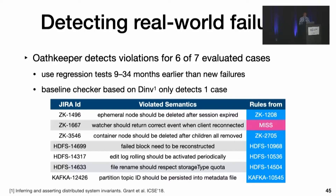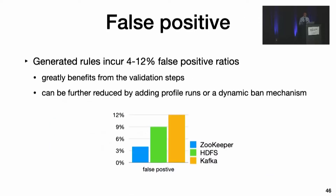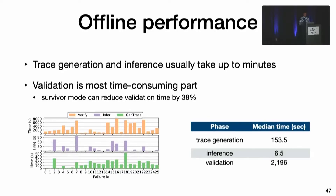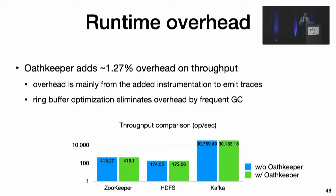In comparison, the baseline checker implemented based on DIMV only detects one of them. The extracted rules incur a 4 to 12 percent false positive ratio, which greatly benefits from the validation step, and can be further reduced by adding profile runs or a dynamic BAM mechanism. Our template-based inference is fast; the most time-consuming part is verifying rules against all test suite tests. The prioritization optimization we introduced can reduce the end-to-end validation time by 38 percent. We also measured the overhead OathKeeper introduces at runtime — the main source comes from added instrumentation to emit traces, with an average system throughput overhead of 1.27 percent. The ring buffer optimization significantly helps achieve this low overhead.